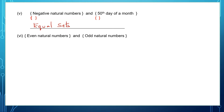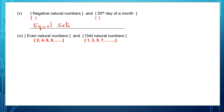Sixth one: even natural numbers and the second set is odd natural numbers. Even natural numbers are 2, 4, 6, 8 and so on. Odd natural numbers are 1, 3, 5, 7 and so on. The members are not the same, but the number of elements in both sets will be the same. So such sets are called equivalent sets.